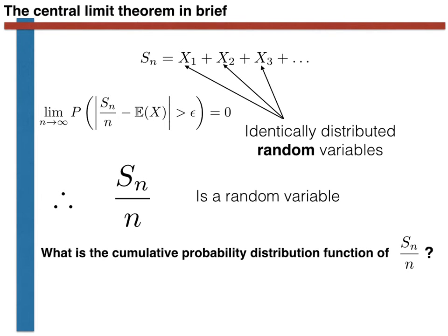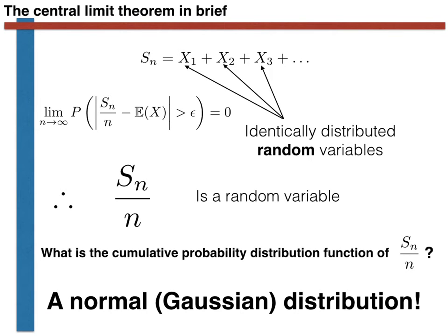Now, given this, and given all we now know about random variables, we might reasonably ask: what is the cumulative probability distribution function for the random variable Sn over n? As it turns out, because of a result known as the central limit theorem, this cumulative probability distribution function is that of a normal Gaussian random variable.